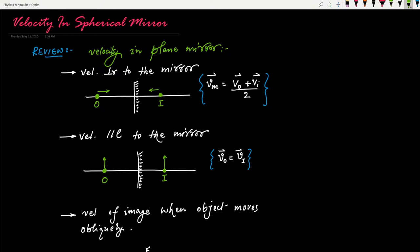Let's review it a little bit before moving into the concept of velocity in spherical mirror. The first case we discussed: if the object moves perpendicular to the mirror, we got that velocity of the mirror equals velocity of object plus velocity of image divided by 2. In most cases, the mirror is still, so vm equals 0. In that case, we got that velocity of image equals minus velocity of object.